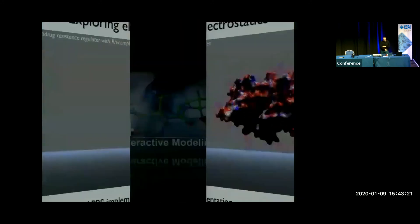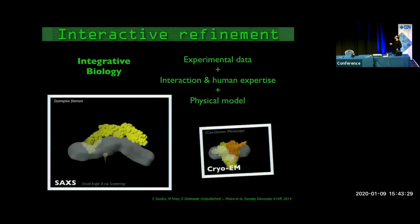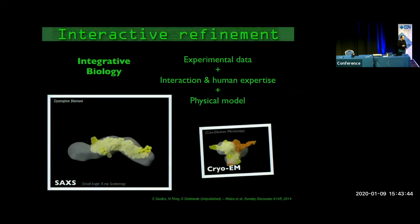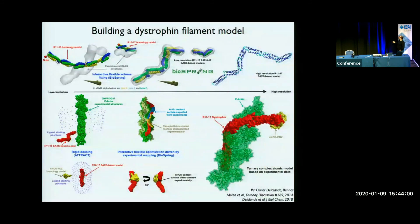The really interesting step is interactive modeling, where you start to modify things. We had a nice talk by Tristan yesterday — we do similar things with interactive refinement, but typically at lower resolution, and we insist on bringing human expertise into the process because there's often not enough experimental data to have it automatically driven. We also modify the level of representation using coarser-grained computational representations. We applied this to modeling the dystrophin filament, a very long filament involved in severe pathologies. We could only get SAXS profiles for different fragments of the whole filament and then stitched them together using this interactive approach.